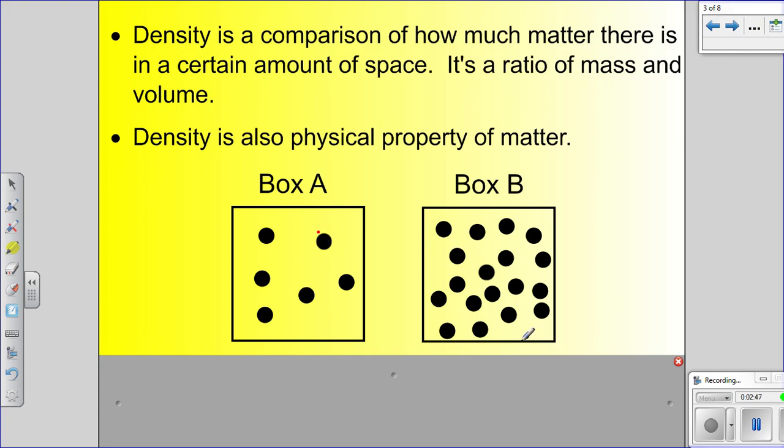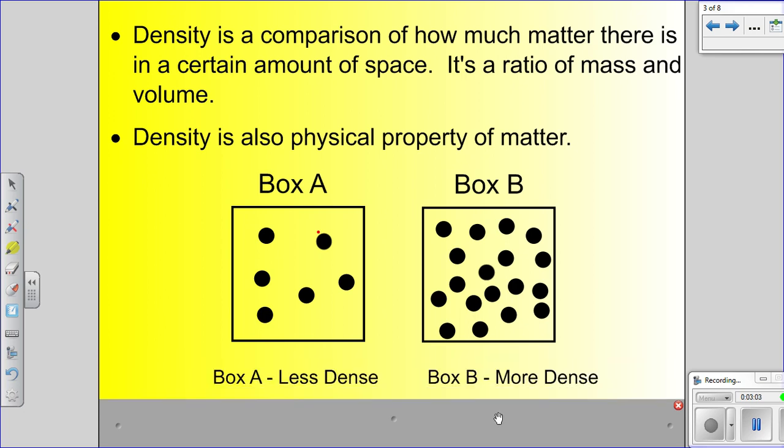But box B, without really adding it up, has about, I don't know, it looks like about 20 pieces of matter. Box A and box B are the exact same size, but box B's matter is more tightly compacted together. And so therefore, we would say that box B is more dense than box A. You can see that right down here. Box A is less dense, box B is more dense. The matter inside this box is packed more tightly together than in box A.